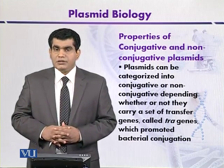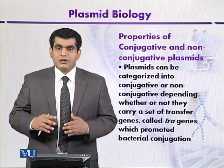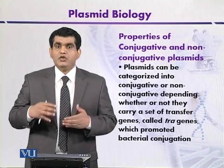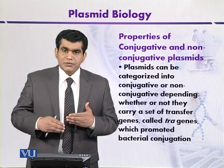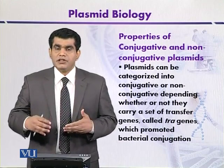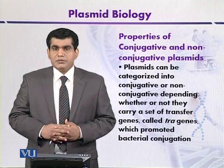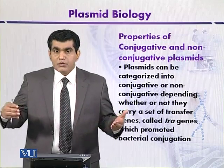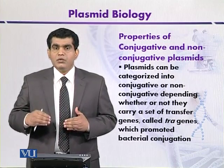On the other hand, if copy number is low, the plasmids are called stringent plasmids. So depending upon the copy number, plasmids may be called relaxed (high copy number) or stringent (low copy number) plasmids. Those plasmids that mediate conjugation are mainly high molecular weight and present in low copy number.